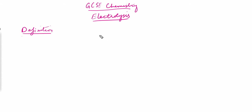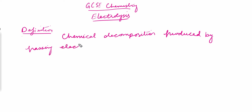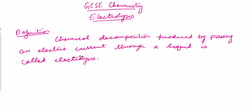Electrolysis is basically a chemical decomposition produced by passing an electric current through a liquid. That is the formal definition of the process of electrolysis.